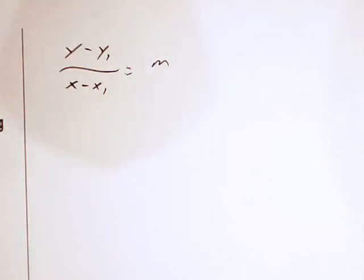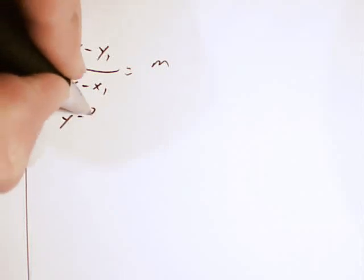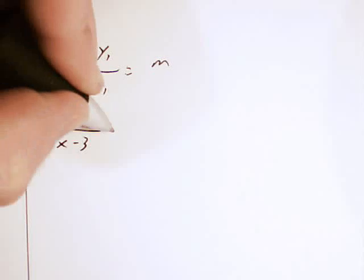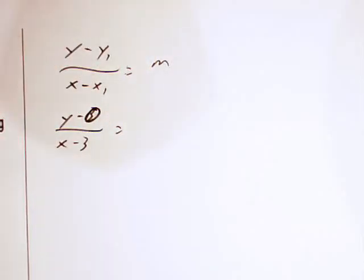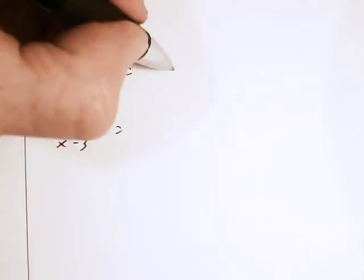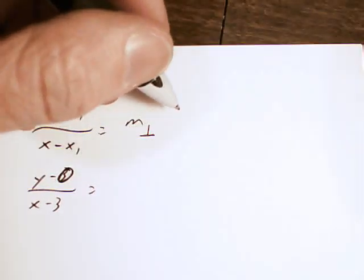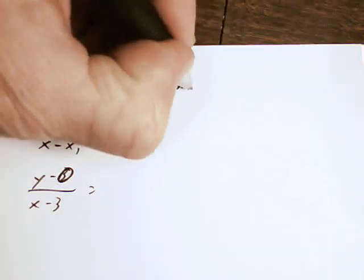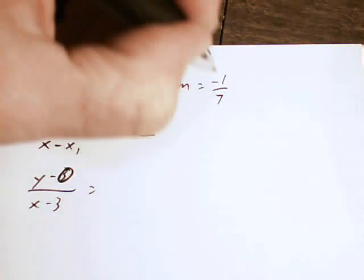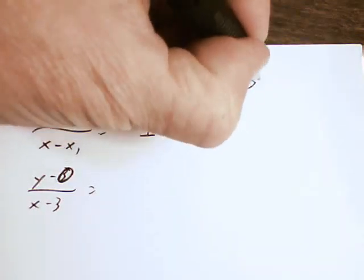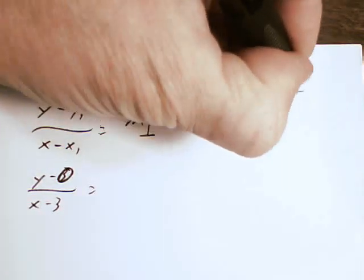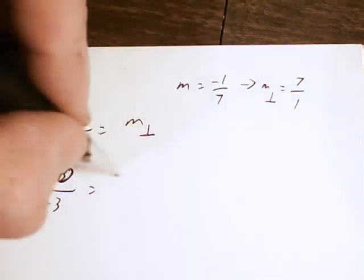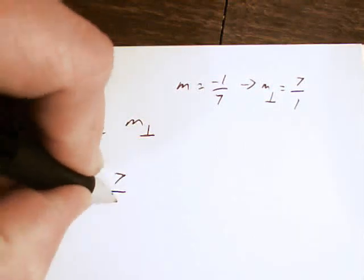So I'm going to plug in the point, 3, 0. Y minus 0 over x minus 3 equals... Now, before I do that, I've got to get the perpendicular slope. Recall that the perpendicular slope is the negative flip of the original slope. So my slope was equal to negative 1 over 7. My m perpendicular will be 7 over 1. I flip the fraction and I multiply it by negative 1. So my perpendicular slope is 7 over 1.